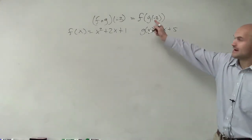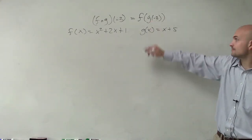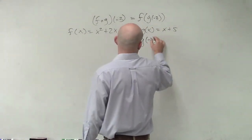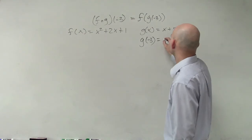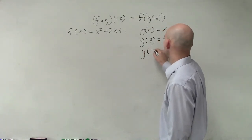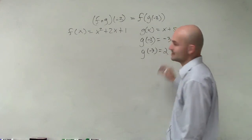So therefore, they're asking us to find g of negative 3. If I know g of x, to find g of negative 3, I just plug in negative 3 for x. So g of negative 3 equals positive 2.